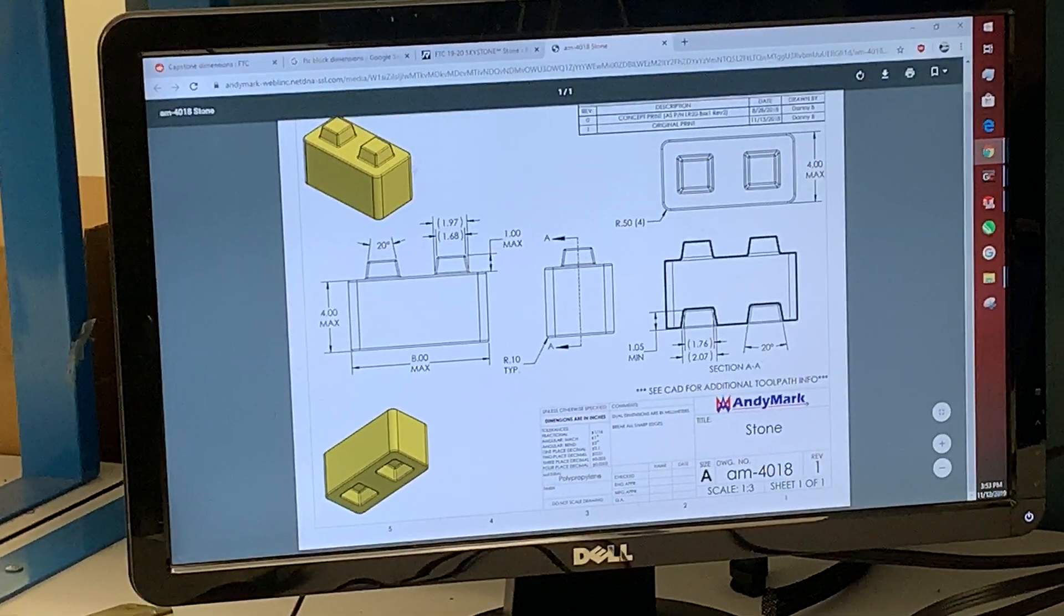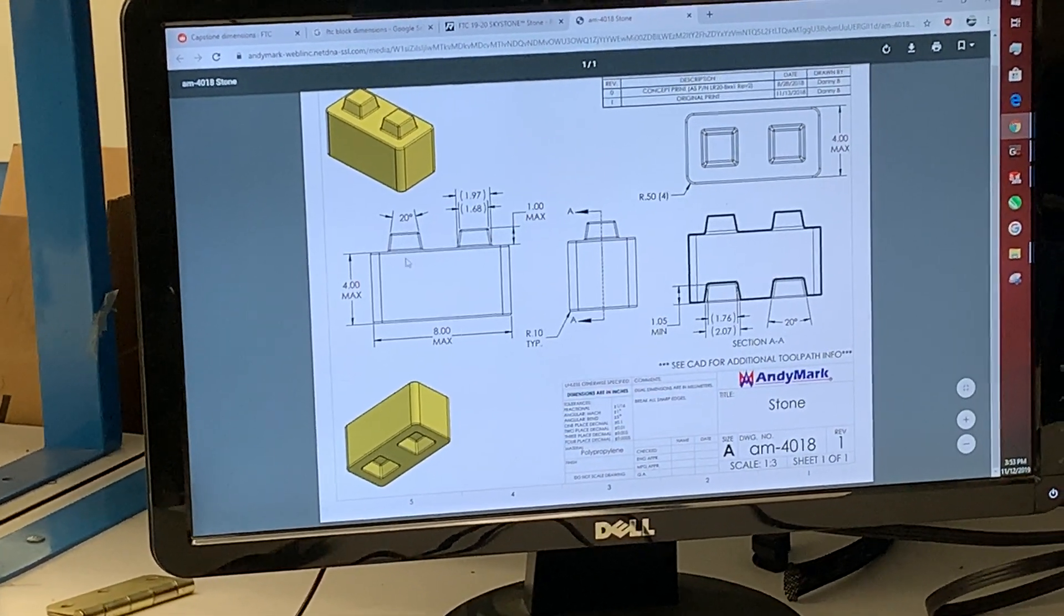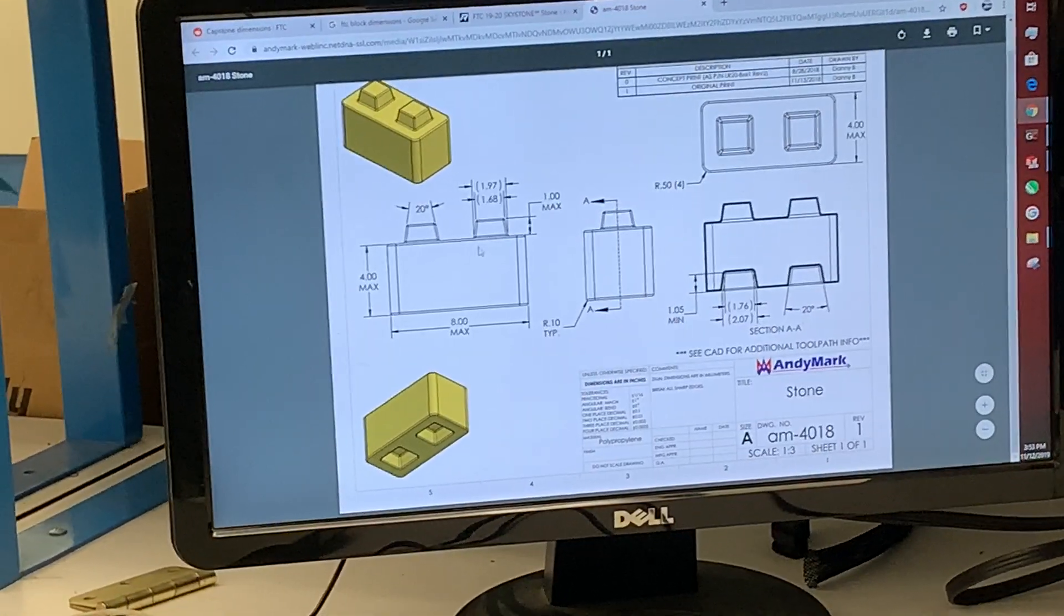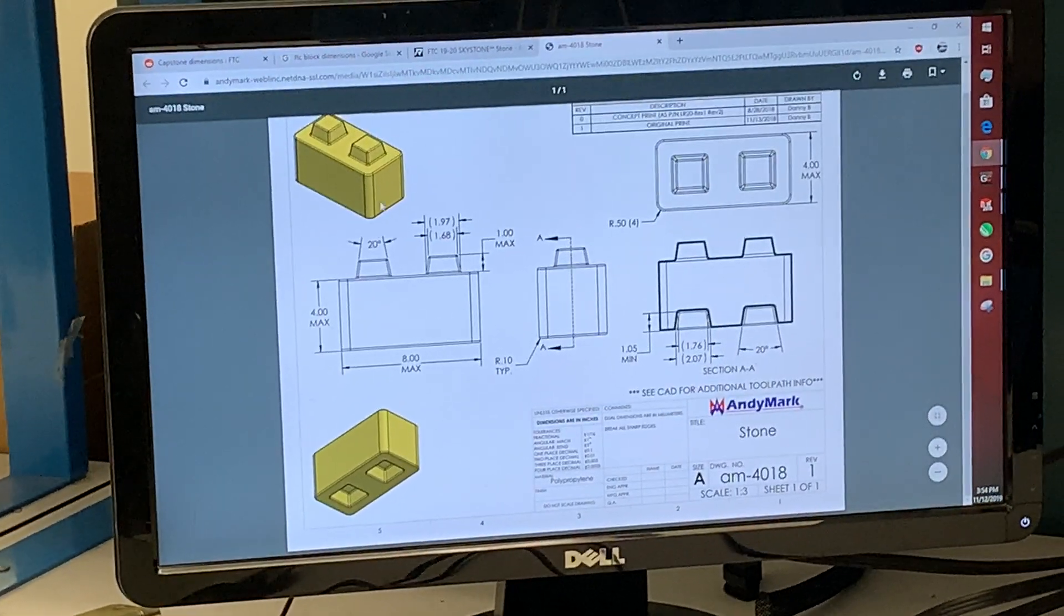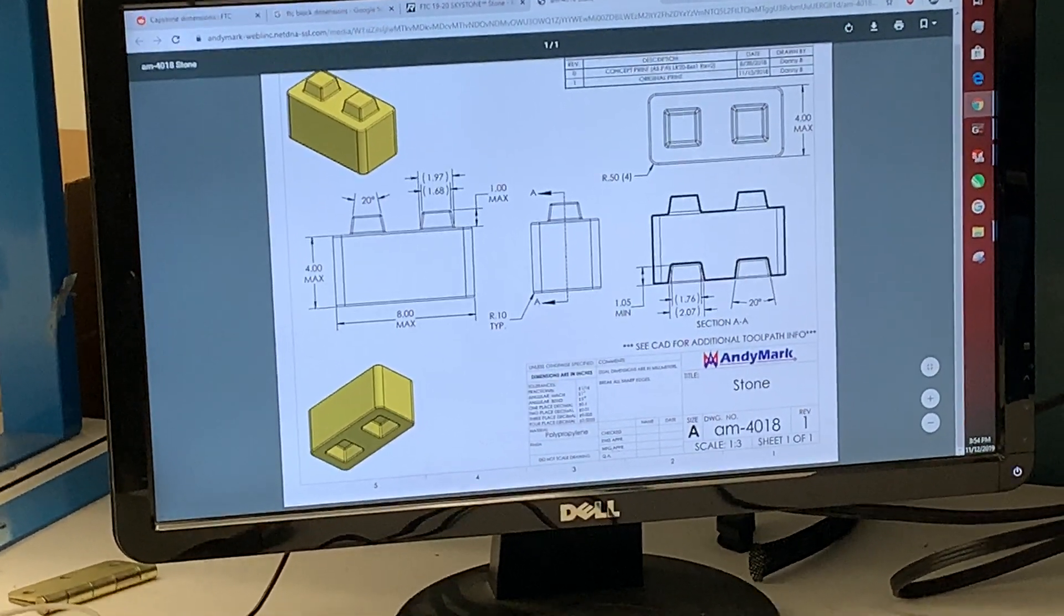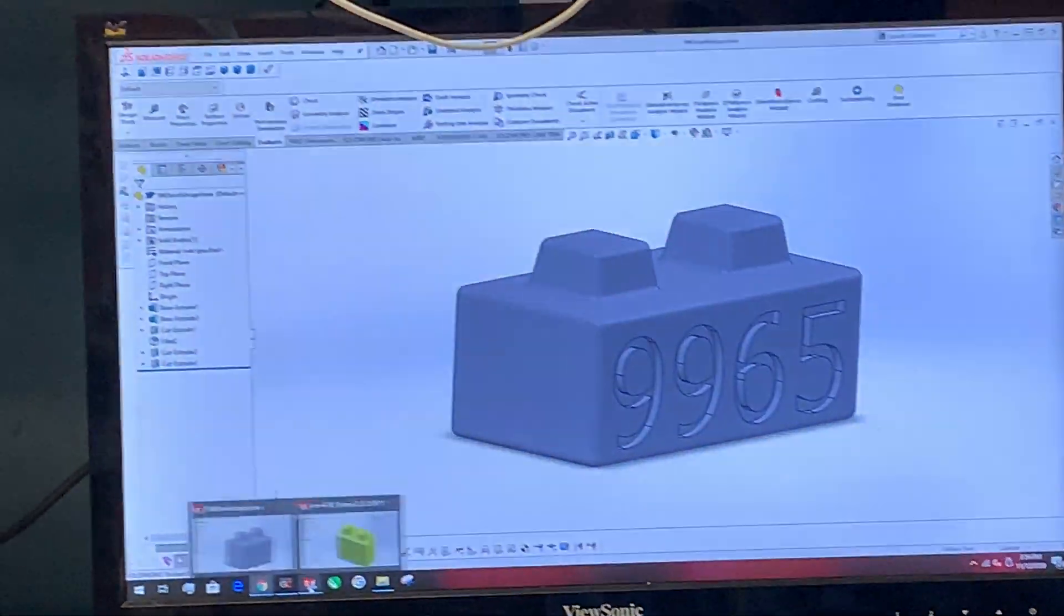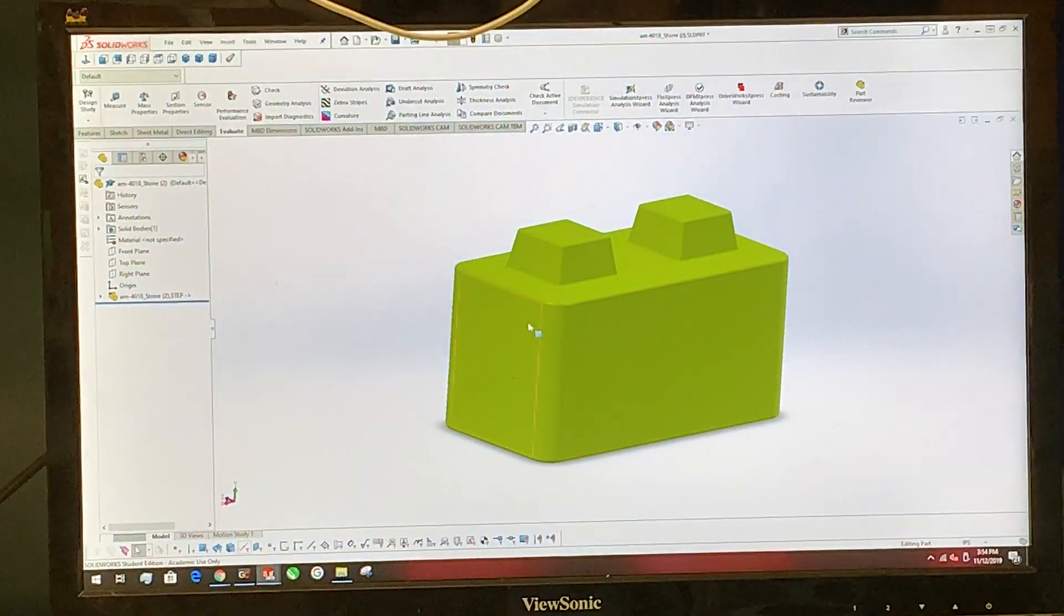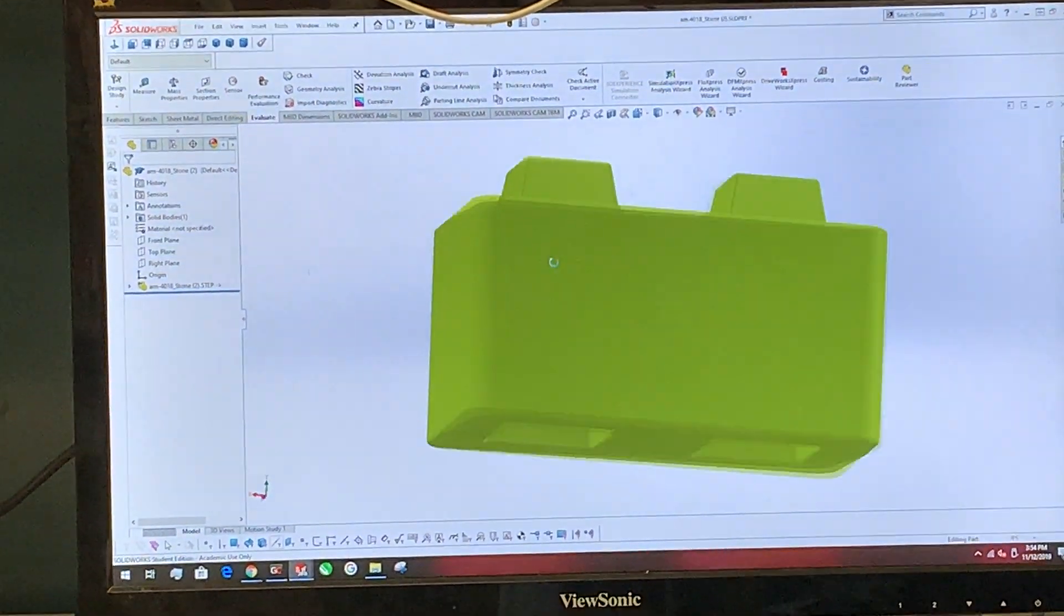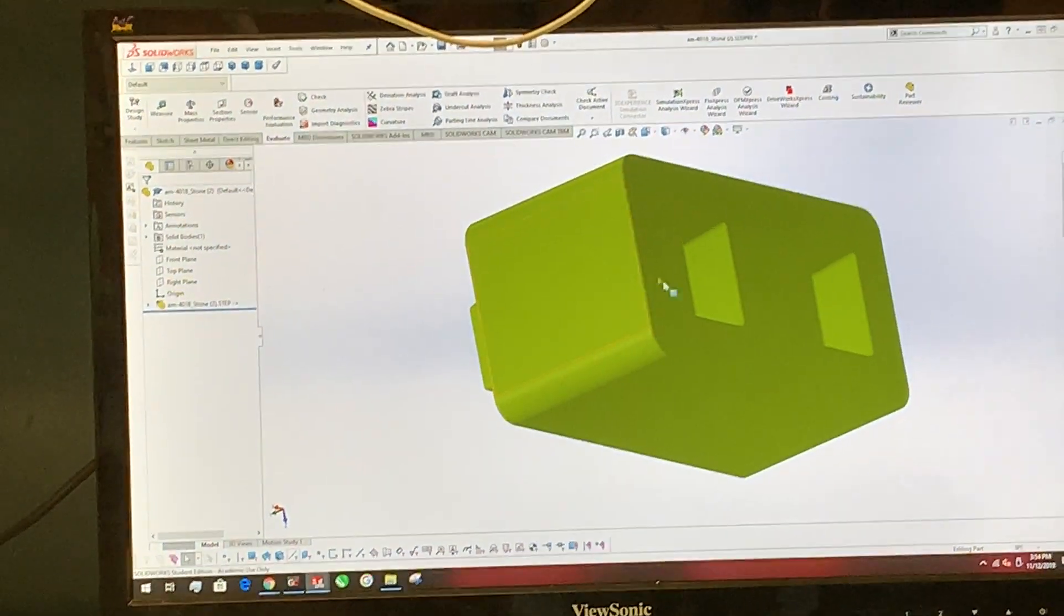If you look over here, this drawing has all the information you need, like the sizes and the degree angles. And then if you look over here, this is what they provided as the CAD file. It's a normal block with the indents on the bottom.